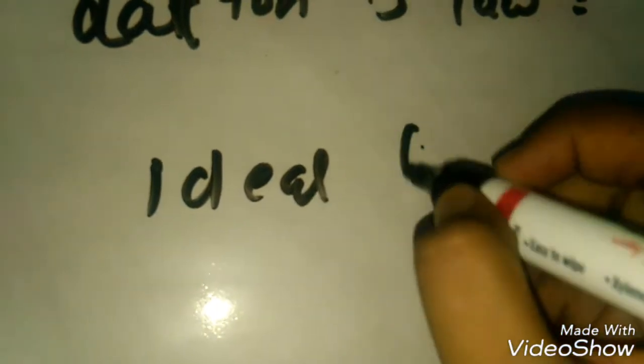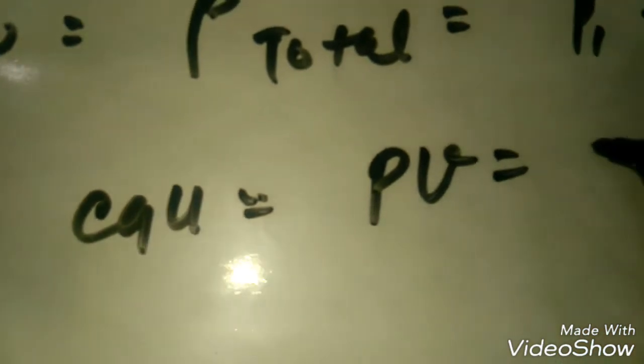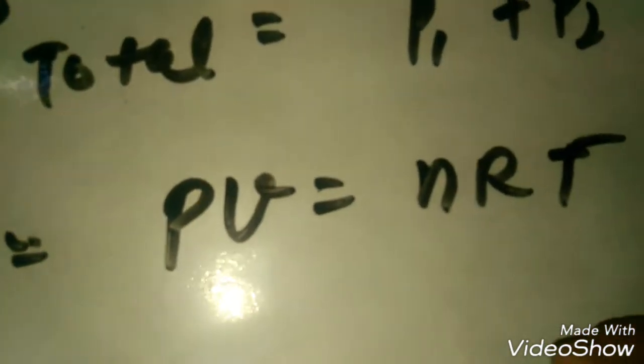Ideal gas equation. What is ideal gas equation? PV is equals to nRT.